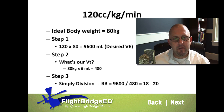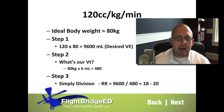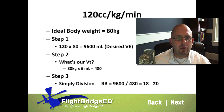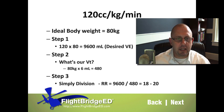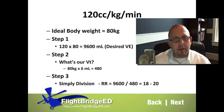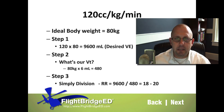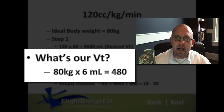Now we need to identify our tidal volume. Our desired minute ventilation is 9,600 mils per minute. Even though our goal range is four to eight liters per minute, because of dead space loss we have to raise that minute ventilation up a little bit. Our tidal volume is based on ideal body weight — starting at six mils per kilo — so 80 times 6 gives us a tidal volume of 480 mils.